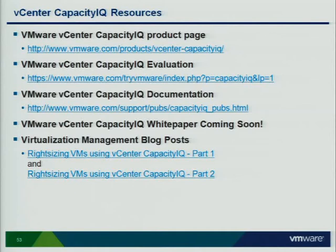It's like the mainframe coming back — you had to build a physical box for its peak load. Now you've got physical boxes that are way bigger than any one peak load, and you put all those little guys together and get an average load. That's the beauty of virtualization.